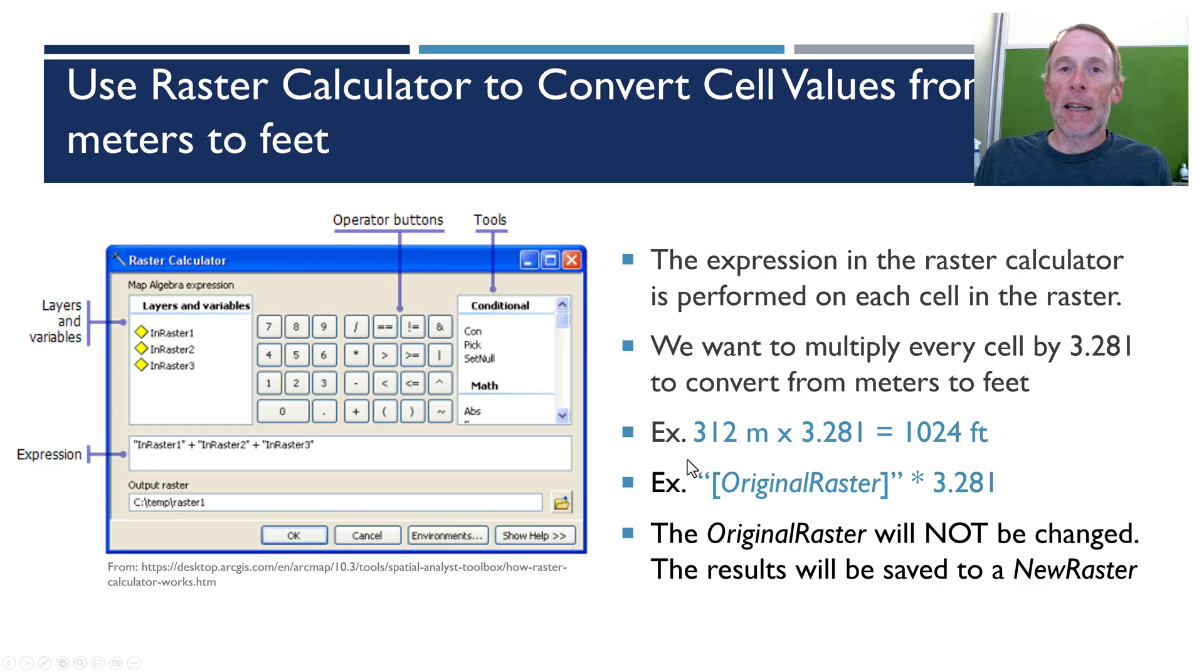So an example of that just in plain old math would be 312 meters if that was the elevation of an individual cell times 3.281 equals 1024 feet, so that would be the new raster value for that individual cell.